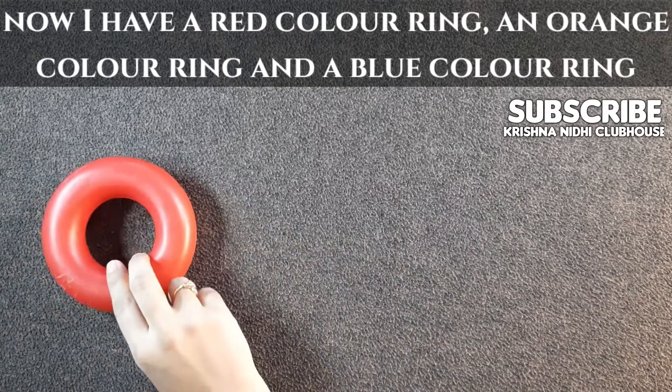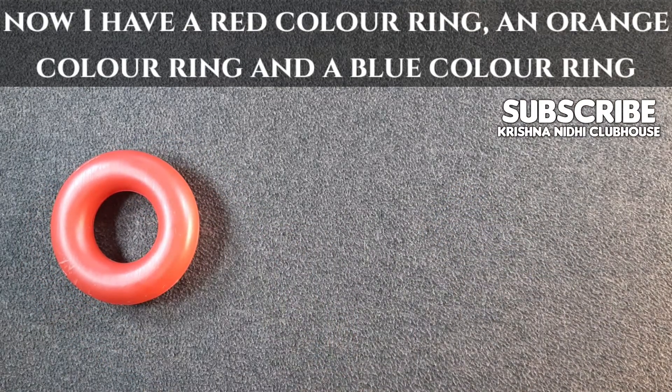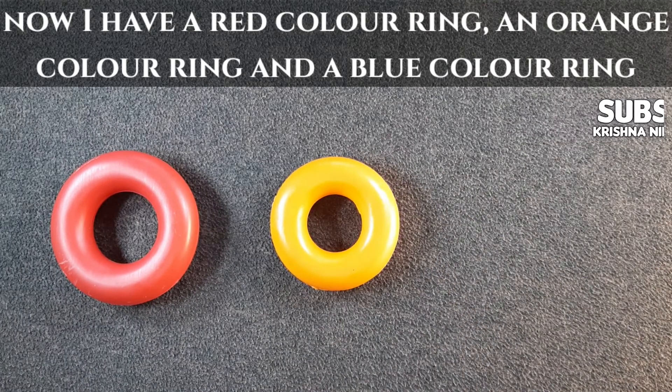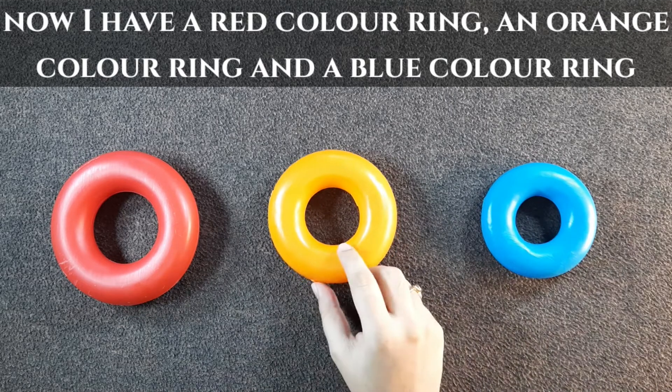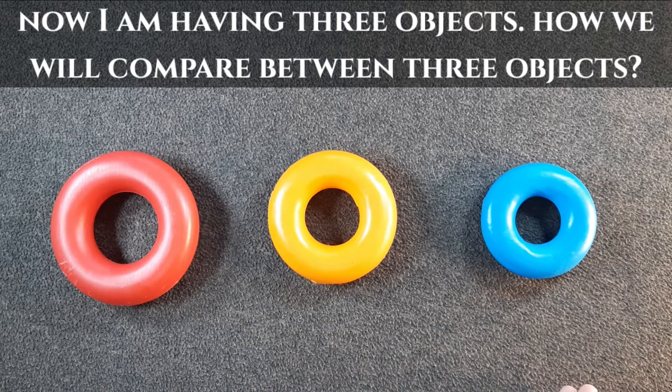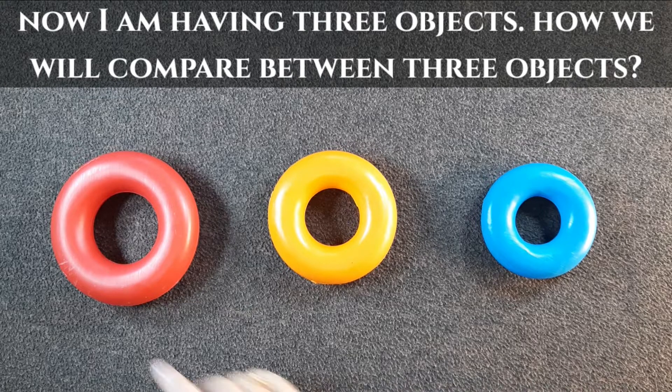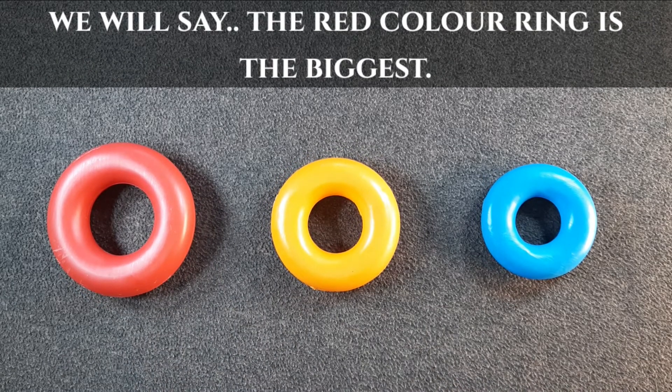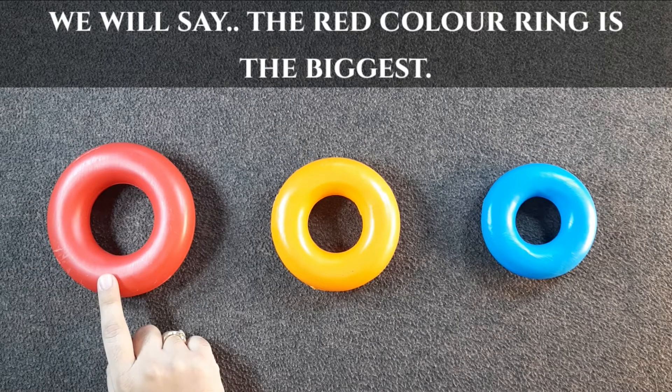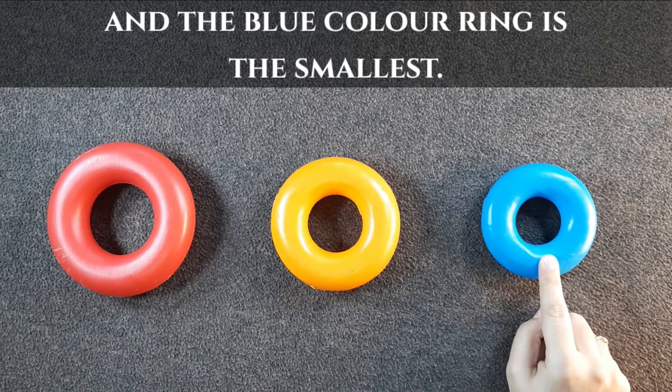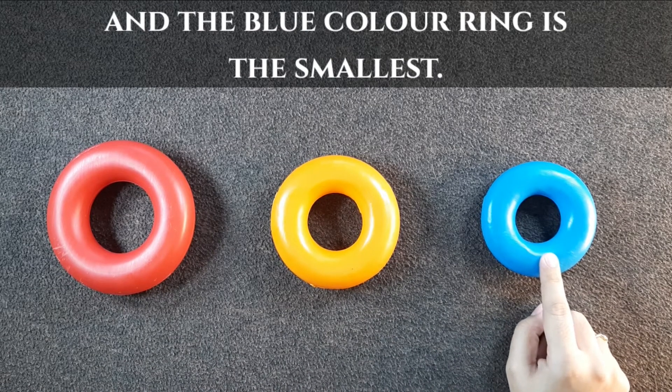Now I have a red color ring, an orange color ring and a blue color ring. Now I am having three objects. How will we compare between three objects? We will say the red color ring is the biggest and the blue color ring is the smallest.